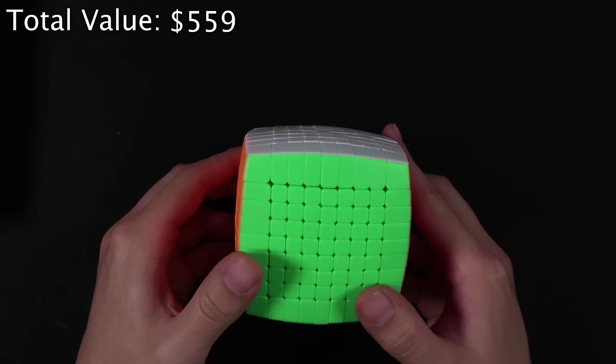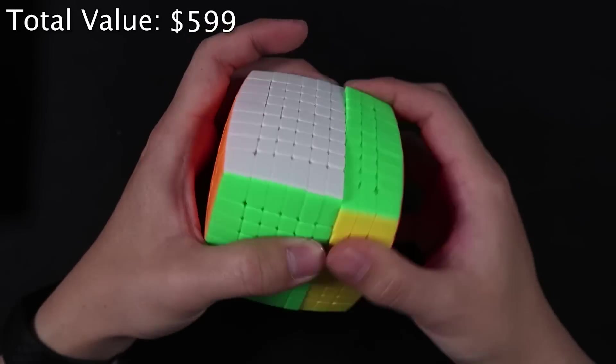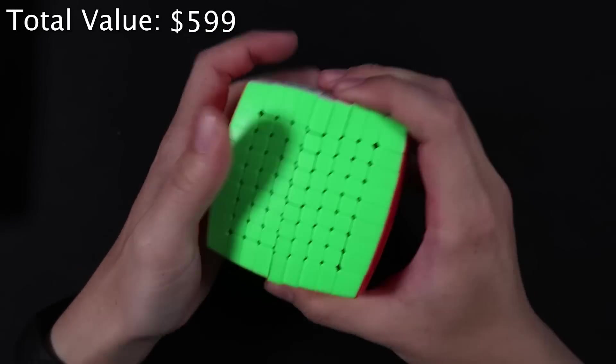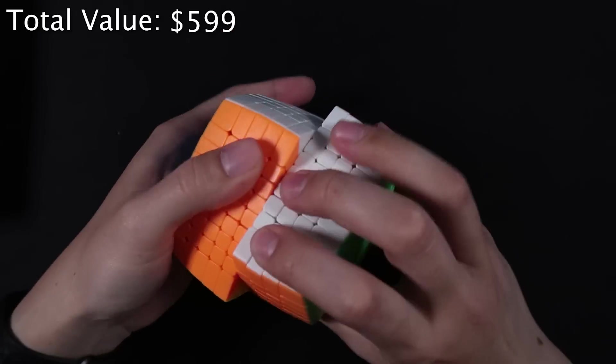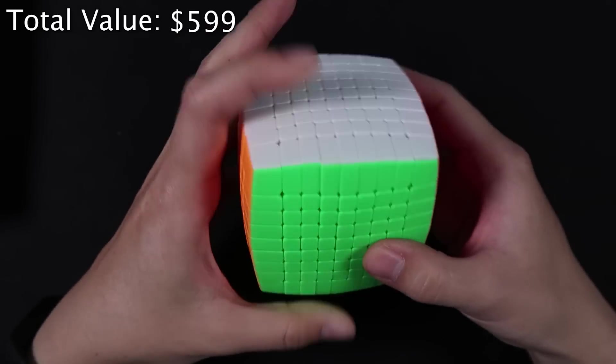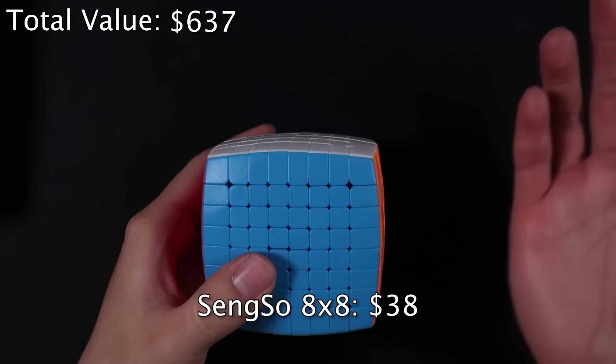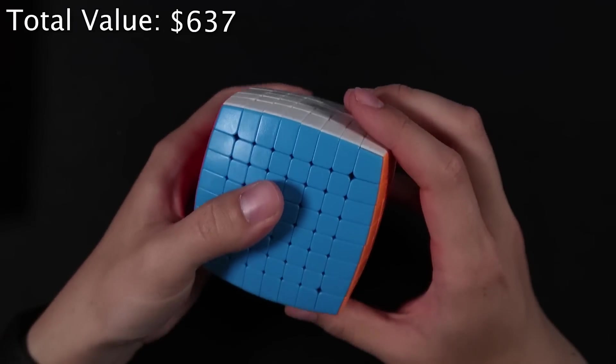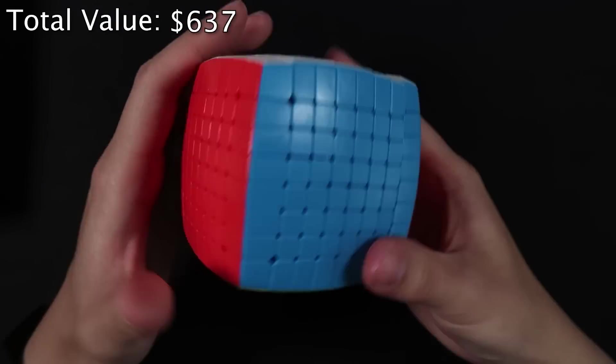And now for all the cubic puzzles, we'll start with this guy. This is a Xingxiao 9x9. This is my first 9x9 ever, and this cube turns surprisingly well. It's not magnetic. I don't particularly like the colors, but for a 9x9, it's pretty awesome. I really like this one. We also got the younger brother. This is the Xingxiao 8x8, also my first 8x8. This puzzle doesn't turn all that well, if I'm being honest. It's kind of expected. Even layered cubes tend to not turn as well as odd layered cubes, but it's still really cool to have.